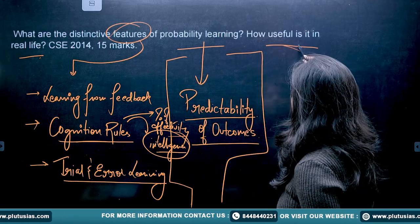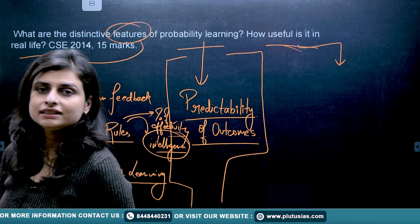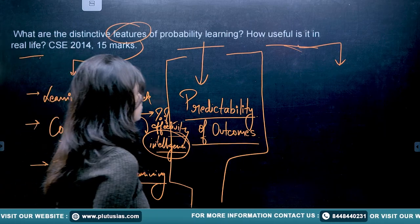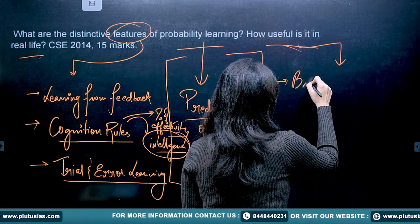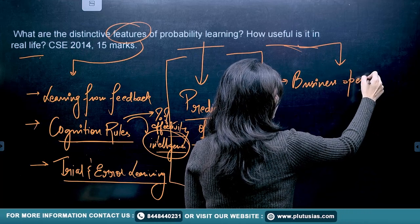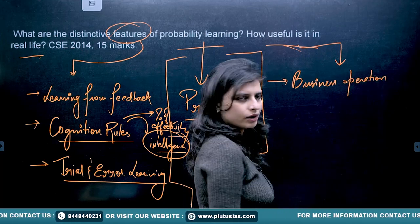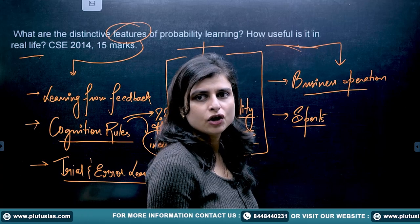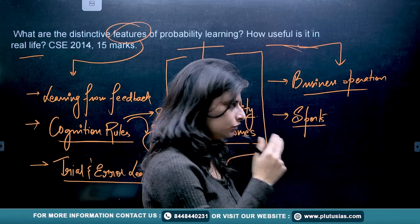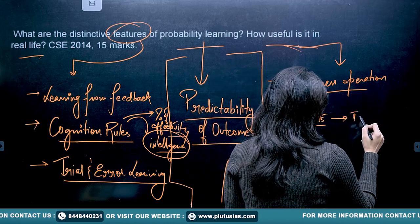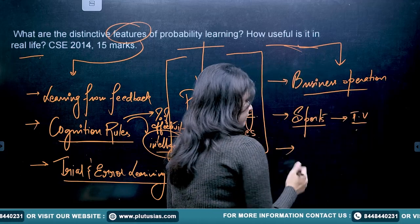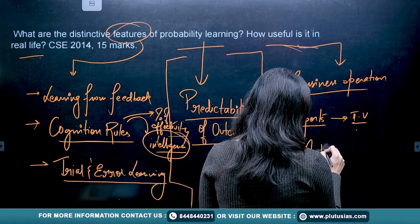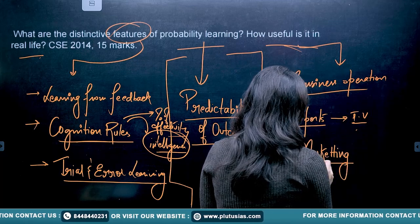Now, how useful is probability learning in real life? In business operations, nobody is certain about what is going to happen — probability learning is applied there. Similarly in sports, people view results and predict that if a certain approach is applied, different changes could occur. In marketing behavior, focusing on certain aspects may bring positive results.